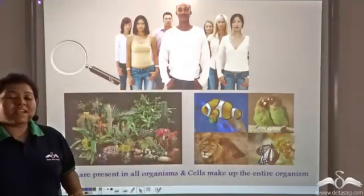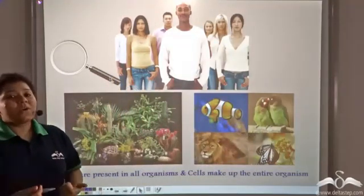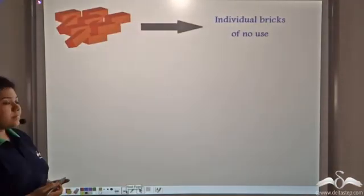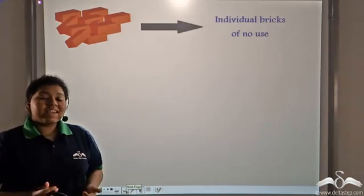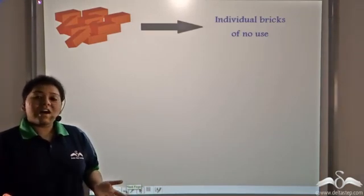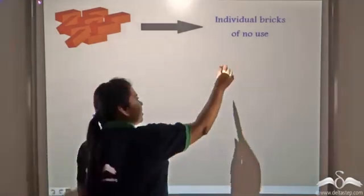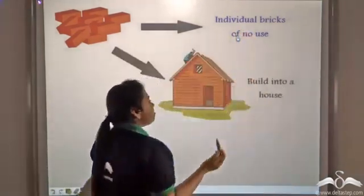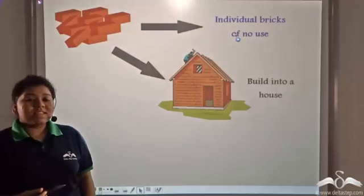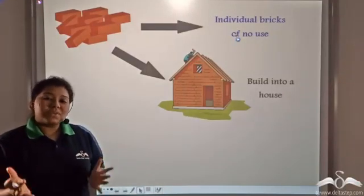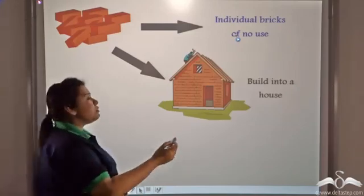So cells make up the entire organisms. Just like individual bricks are of no use but a number of bricks together helps in building a house, similarly, a large number of cells together forms the human body.